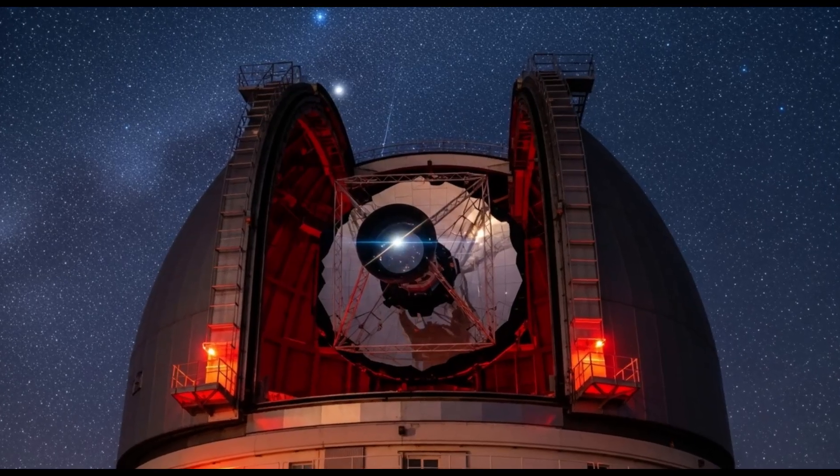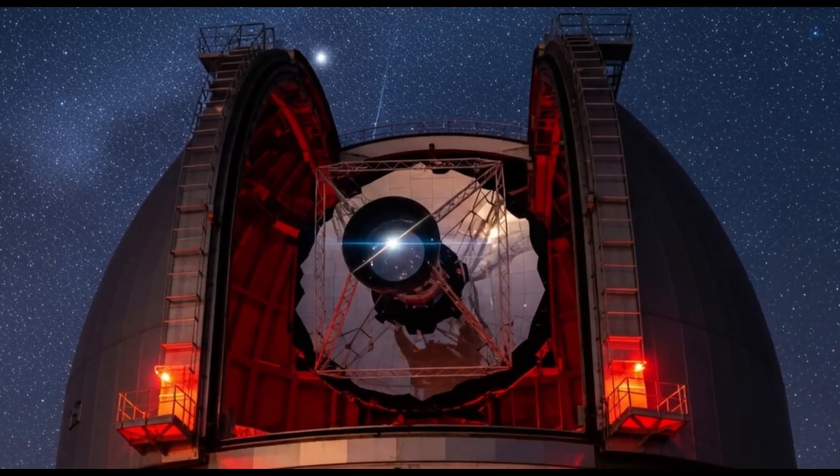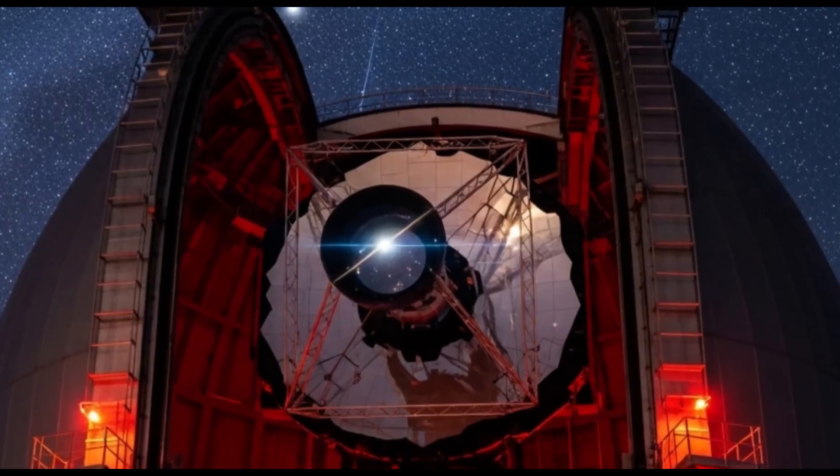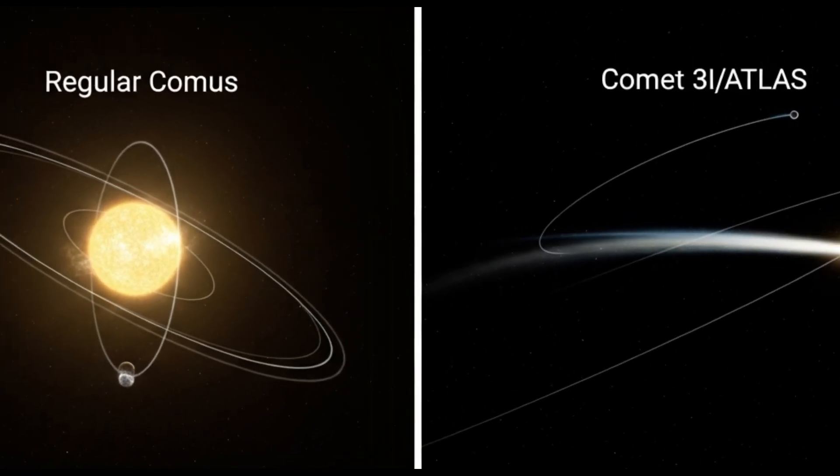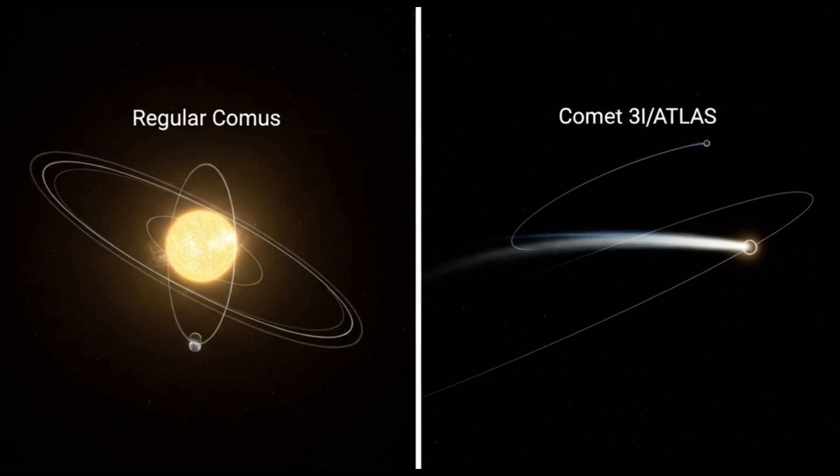Discovered in 2025, it's only the third interstellar object humanity has ever detected passing through our neighborhood. Unlike comets from our own system, its path is a one-way ticket. It came from the void, and to the void it will return.